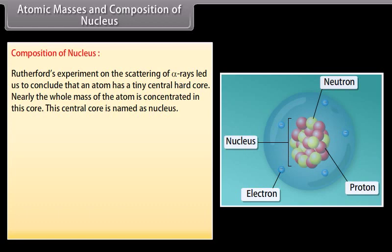Rutherford's experiment on the scattering of alpha rays led us to conclude that an atom has a tiny central hard core. Nearly the whole mass of the atom is concentrated in this core. This central core is named as nucleus.